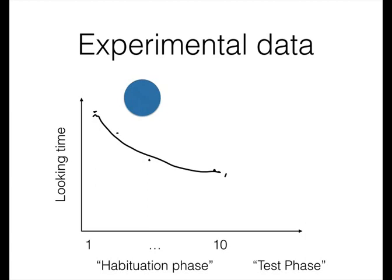Once they reach some criterion, say half of what they were looking at the circles at the beginning, then we move on to the test phase. The baby sees squares. And if their looking time goes up again, then we say that they've dishabituated, and they can discriminate the two stimuli. Of course, their looking time will continue to go down afterwards. But the key fact is that increase again. That's the dishabituation.